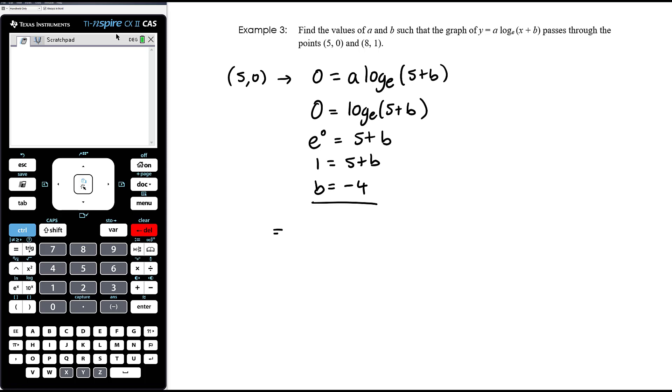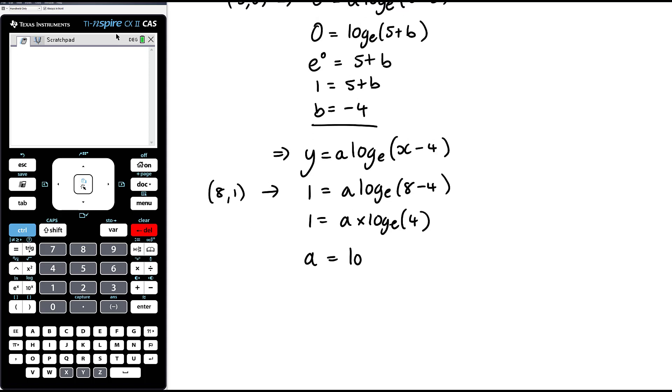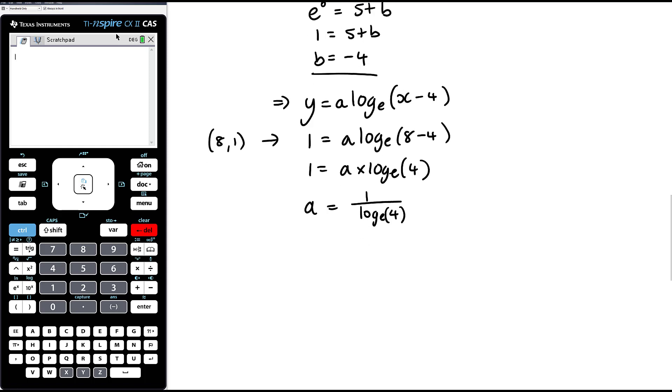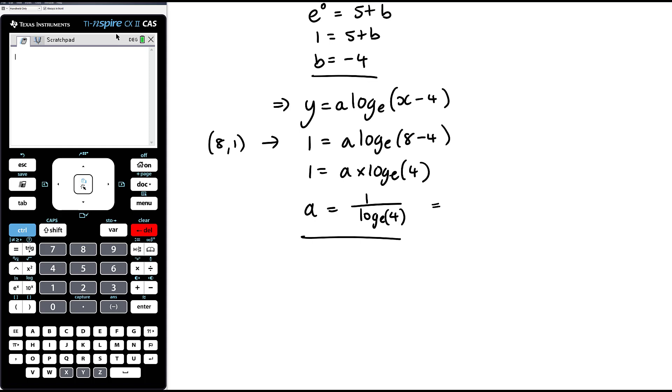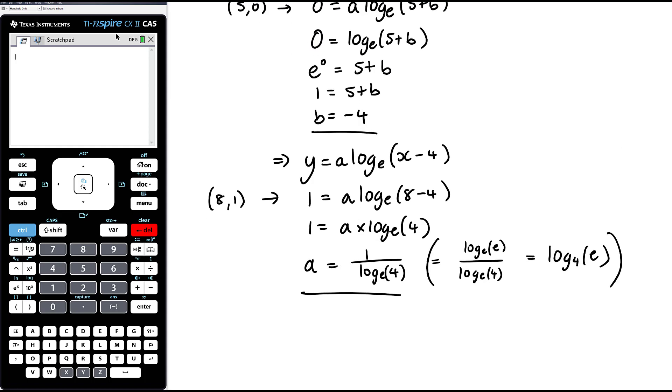And then we can sub our other point in. So now we know that our equation is y equals a times log e of x minus 4. And now we can sub our other point in which is 8, 1 and use that to find a. So y is 1 when x is 8. A times log e of 4. And so a equals 1 divided by log e of 4. It's perfectly fine to leave that answer as that, and I probably would. But if you want to think about that sort of change of base idea, 1 is log e of e over log e of 4. And if we have the same base here, this is actually the same as log base 4 of e. So if you prefer to write a equals log base 4 of e, rather than it be 1 over log base e of 4, then that's perfectly okay too. But you certainly don't need to do that.